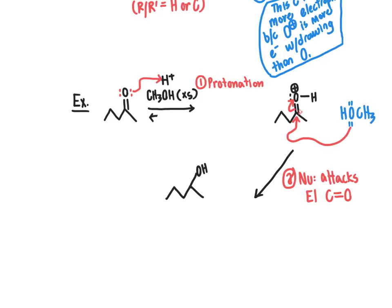We now have a new bond formed between the oxygen of methanol and our carbonyl carbon. This puts a positive formal charge on that oxygen. As we usually do when we end up with an oxygen carrying an extra proton giving a formal charge, we need to deprotonate that oxygen. The third step of the mechanism is deprotonation. Notice that step one was protonation and step three is deprotonation — the acid is acting as a catalyst and is being regenerated at this step.